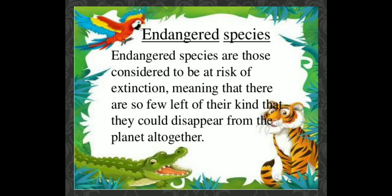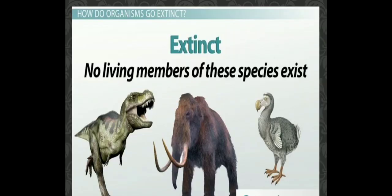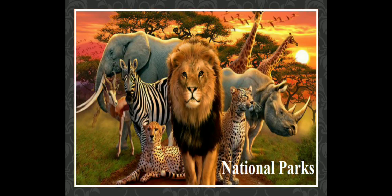Endangered species are those considered to be at the risk of extinction, meaning there are so few left of their kind that they could disappear from the planet altogether. You might remember the dinosaur, which became extinct a long time ago. This has happened because the survival of some animals has become difficult due to disturbance in their habitat by human beings.